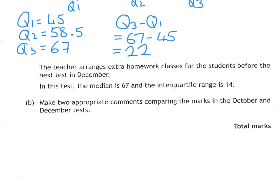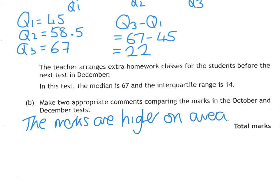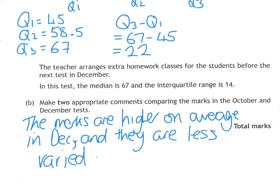We're then going to compare this. The teacher arranges extra homework classes, and for the November test the median is 67. We can see the median's improved, so the results are generally a bit higher, and your interquartile range is lower. The lower it is, the closer the numbers are. Using the median, the median has improved from 58 to 67, so the marks are higher on average in December. Because your interquartile range is lower, they are less varied.